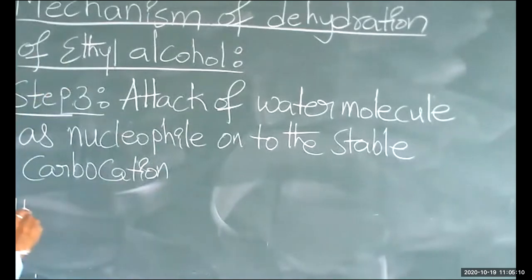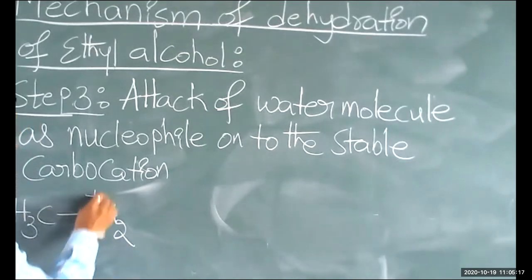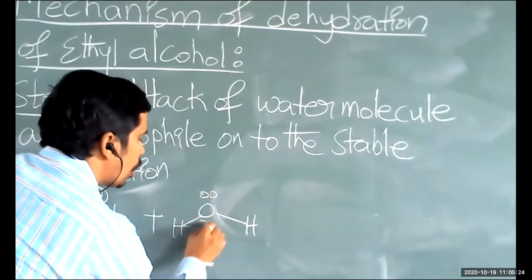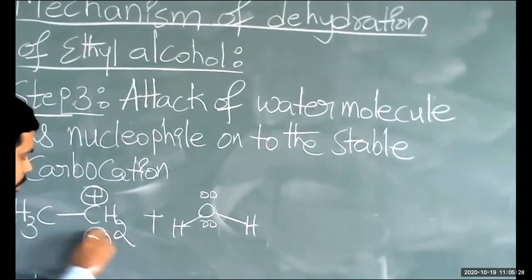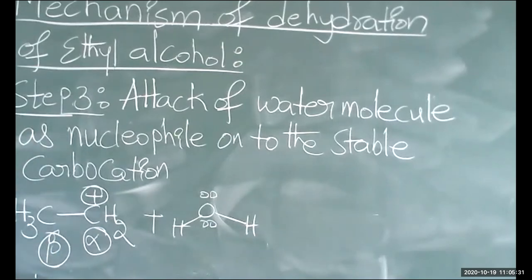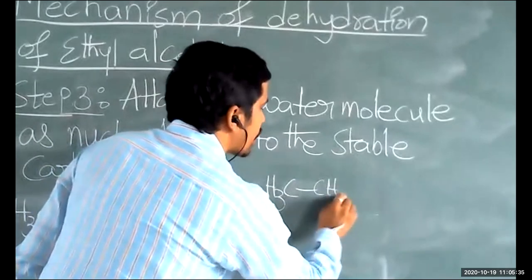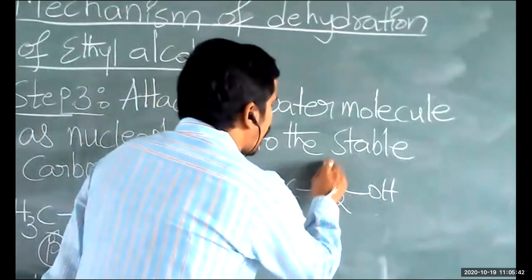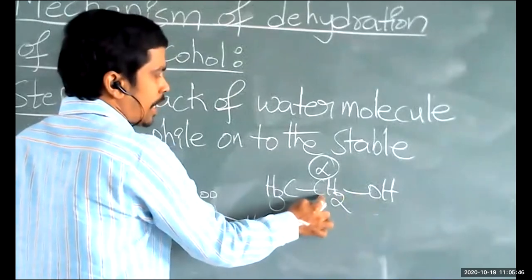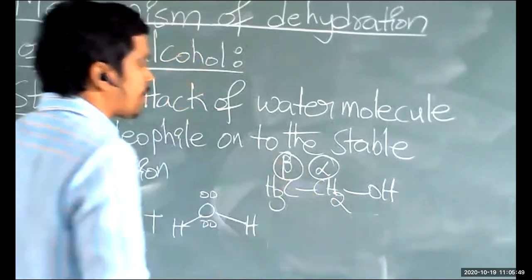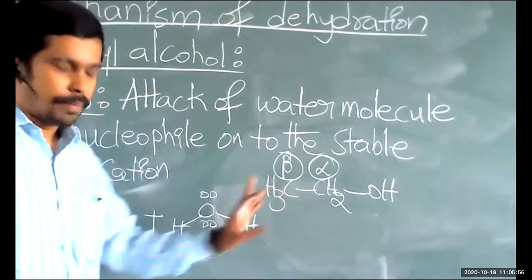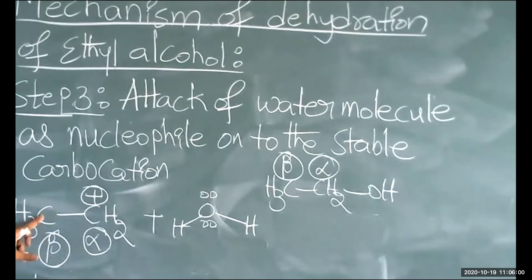In step two, water was formed and the ethyl carbocation CH₃–CH₂⁺ was formed. Now consider the ethyl alcohol: the functional-group-attached carbon is called the alpha carbon, and the adjacent carbon is called the beta carbon. In ethyl alcohol CH₃CH₂OH, the CH₂ carbon is the alpha carbon and the CH₃ carbon is the beta carbon.